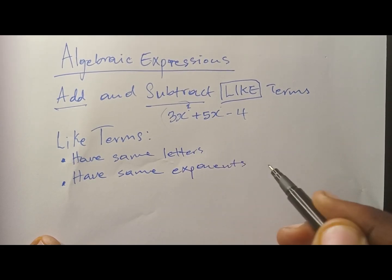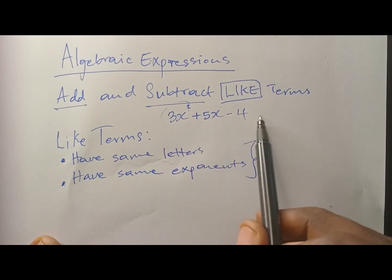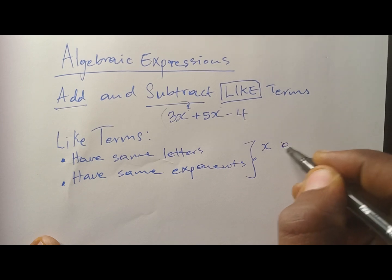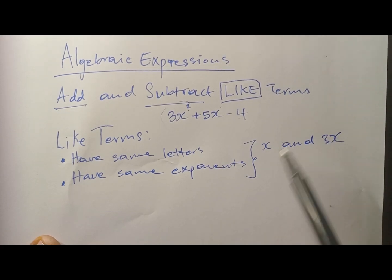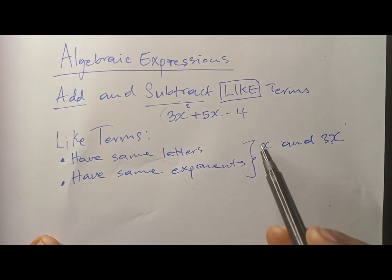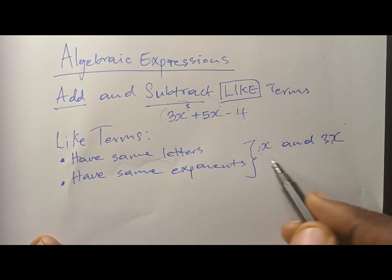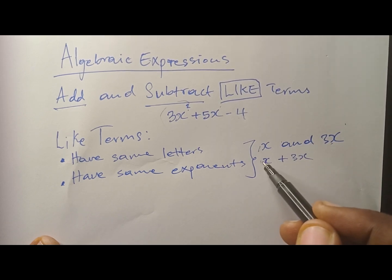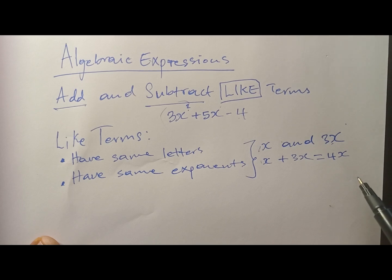For example, x and 3x are like terms. x has an invisible exponent of one, and 3x also has exponent one. So 1x plus 3x equals 4x. You can add these because they have the same letter and the same exponent.